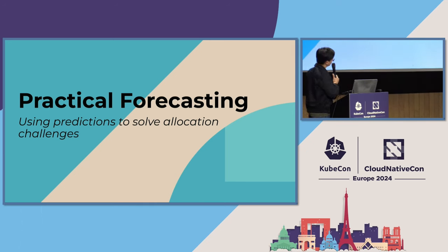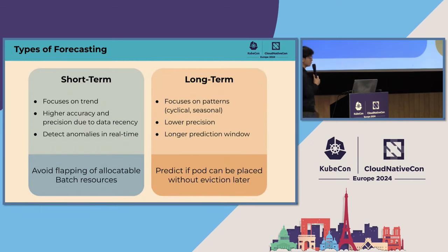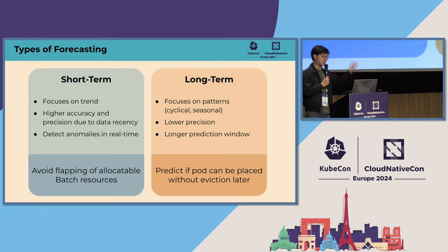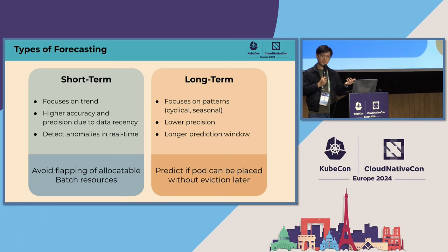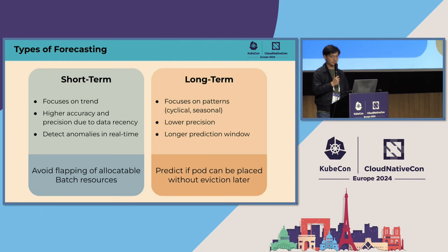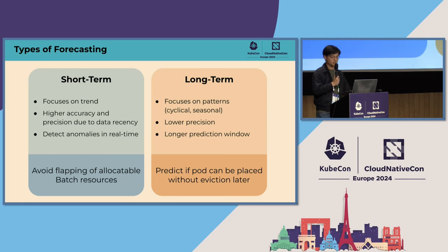Before we get into the details about how we can address the scheduling challenges through forecasting, let's first dig into the theory. We'll consider two time horizons for forecasting. The first is short-term, which focuses on the immediate trend and the likely trajectory of a signal. The next is long-term forecasting, which focuses on patterns such as cyclical changes in resource utilization. We use short-term forecasts primarily to solve the problem of flapping where metrics may fluctuate up and down repeatedly — our goal is to make the metric appear more smooth to help tolerate short-lived spikes in CPU usage and reduce unnecessary evictions. For long-term forecasts, our goal is to predict the future resource usage of a given service and help the scheduler make smarter placement decisions.